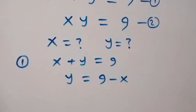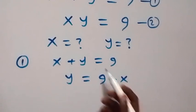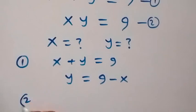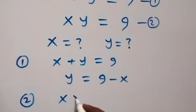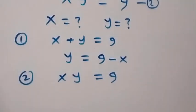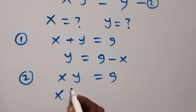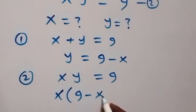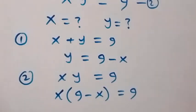Then we can substitute this back in equation 2. That is, from equation 2, what we have is xy equals to 9. So equation 2 then becomes x times (9 minus x) equals to 9.